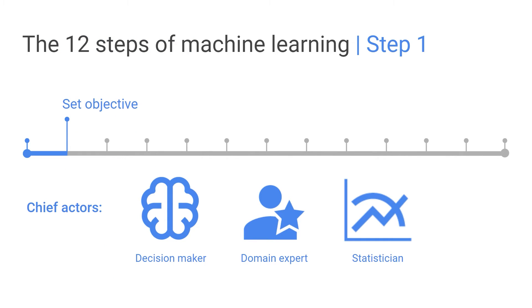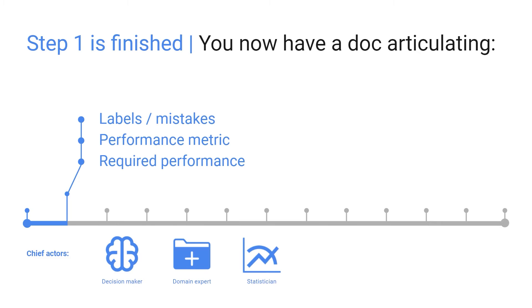Then in step 1, figure out what it means to do good behavior here. What are your goals? Which mistakes are worse than which other mistakes?